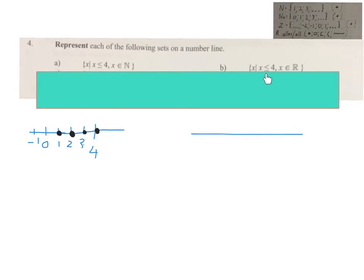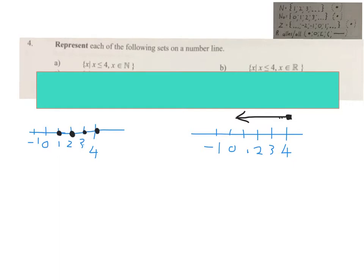For this next question we are working with real numbers, so we're going to draw a line. We start at 4 — because there's an equal sign, I make a dot at 4. It says we're looking for numbers smaller than 4, but there are millions of numbers to the left of 4, so instead of placing millions of dots I draw a line with an arrow. A line is millions of points. Natural numbers had to stop at 1, but real numbers go on forever, so the arrow continues indefinitely.